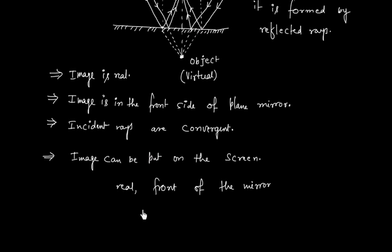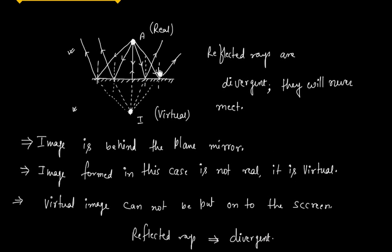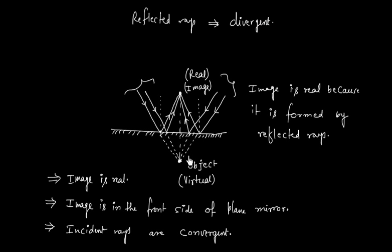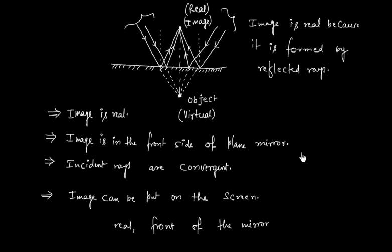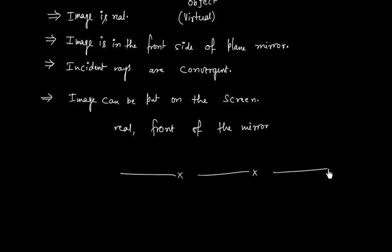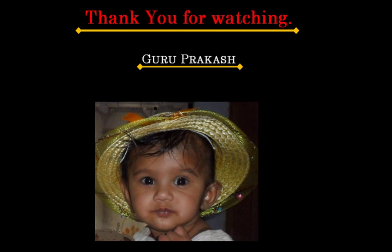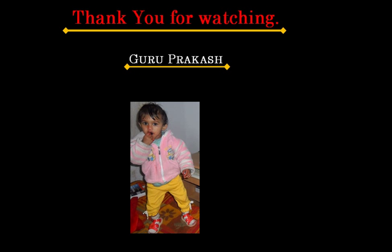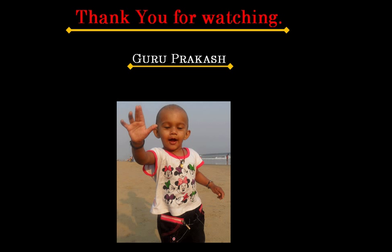In this lecture we discussed about real and virtual images. When reflected rays actually intersect, we have a real image. When reflected rays do not actually intersect but appear to come from some point, the image is virtual. Similarly, when incident rays appear to come from a point behind the mirror rather than actually doing so, we have a virtual object.